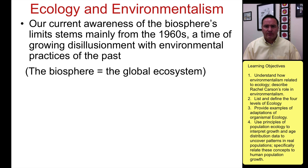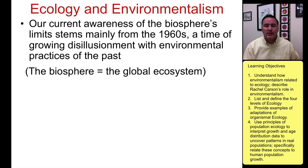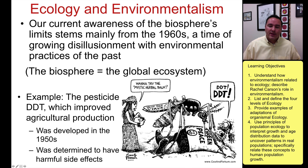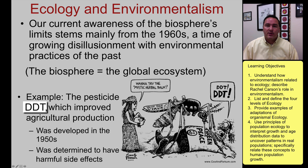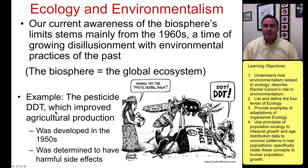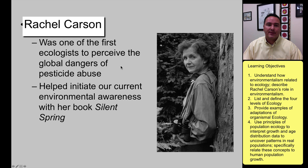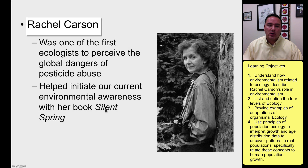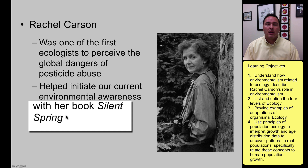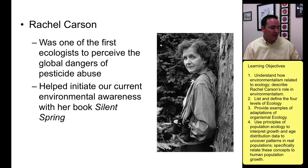Sometimes people get confused between the word environmentalism and ecology. Ecology is the scientific study. Environmentalism is more of the awareness that we need to have with our environment. There are lots of things that have led to environmental awareness — one example is DDT, which was used by the U.S. government to combat mosquitoes. It was very effective but had lots of harmful side effects. Rachel Carson wrote an important book called The Silent Spring, which helped bring about awareness of environmental issues.